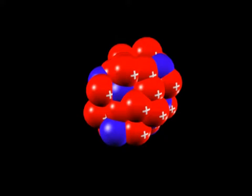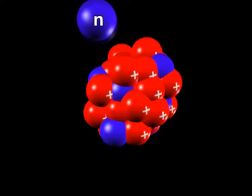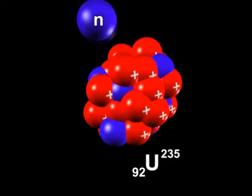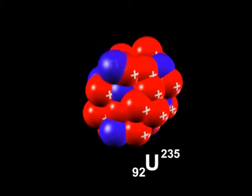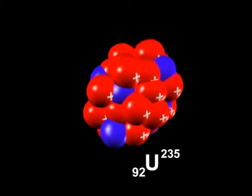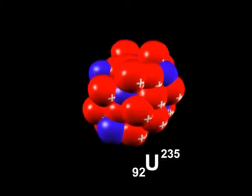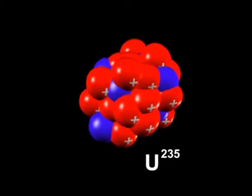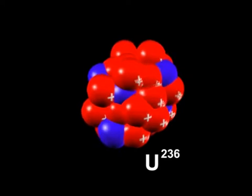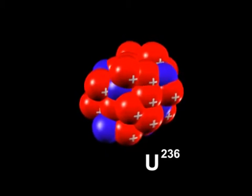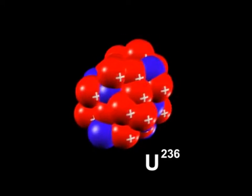When a free neutron is made to strike with a uranium atom with atomic number 92 and mass number 235, the neutron is immediately absorbed by the nucleus of the heavy atom to form uranium-236, which is highly unstable.